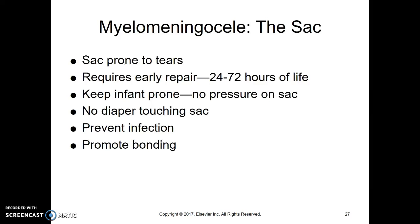Our goal is to keep that sac intact to prevent tearing. We'll take the child to surgery within 24 to 72 hours after birth. While the sac is not yet surgically repaired, we keep the child prone — no pressure on the sac. We still want parents interacting with and touching the baby, but the baby cannot be held in any way that puts pressure on the sac. There's no diaper, as it would rub against it. We focus on preventing infection, since rupture causes meningitis, and on promoting healing.